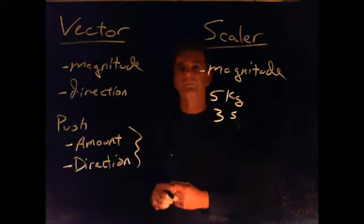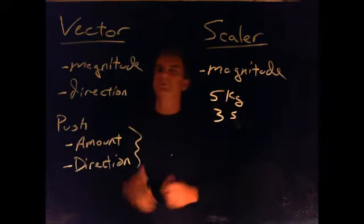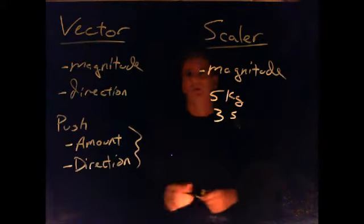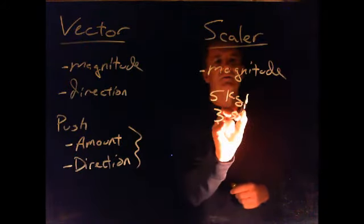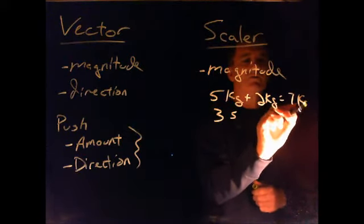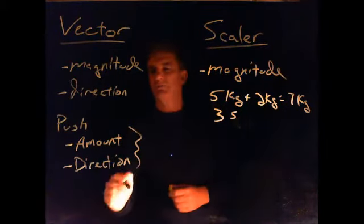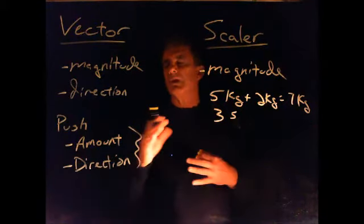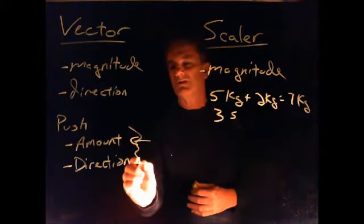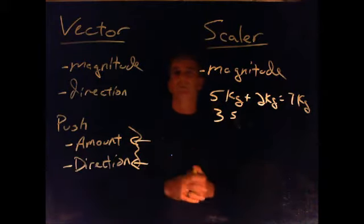Here's our vector. And so the thing with vectors, and what you've got to keep in mind is, we can add up two scalars real easily. Five kilograms plus two kilograms is seven kilograms. That's it. End of story. To add up two forces, it's more than just adding up the numbers. We also have to take into consideration the direction. And that's what we're going to take a look at.